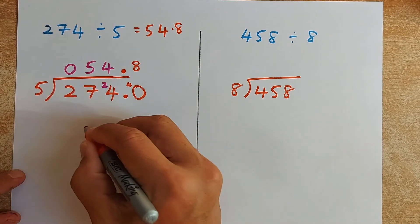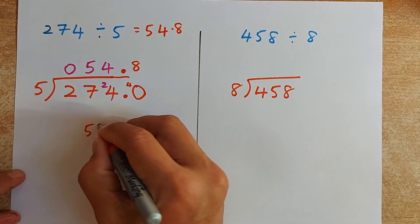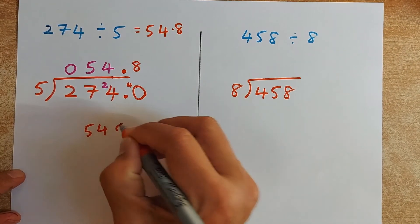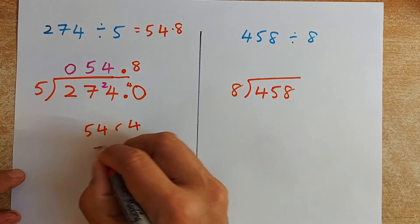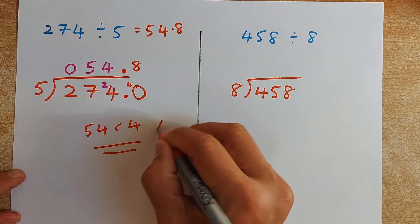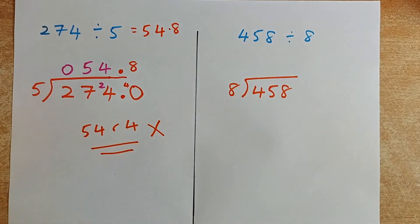In primary school you would put 54 remainder 4, but that is not acceptable in high school anymore.